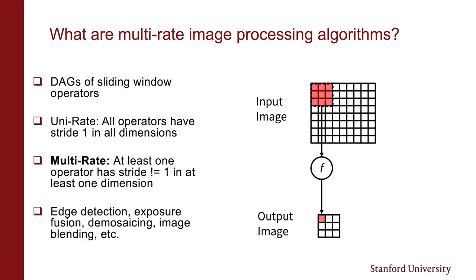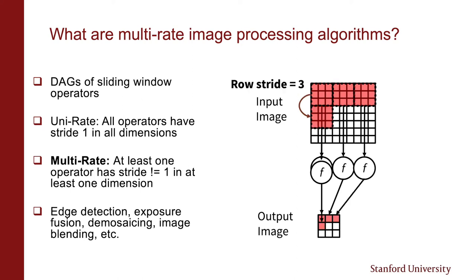So what are multi-rate image processing algorithms? They're directed acyclic graphs of sliding window operators. Sliding window operators are operations like the one shown on the right, where a fixed-sized window of pixels — in this case a 3x3 window shown in red — is passed to a function or kernel to produce an output pixel, and then slid over by a fixed stride, in this case a stride of 3, to produce the next pixel in the output image. This process is repeated over the entire image.